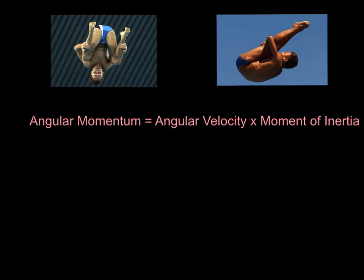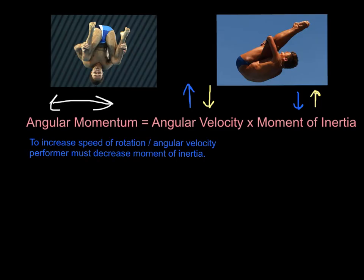Let's look at another example of rotating: Tom Daley doing a dive routine. He's doing somersaults in two different body positions. Remember, angular momentum is a constant. If I want to increase my angular velocity, I've got to decrease my moment of inertia. If I want to decrease my angular velocity - if I want to rotate slower - I need to increase my moment of inertia. To increase speed of rotation or angular velocity, the athlete must decrease moment of inertia.